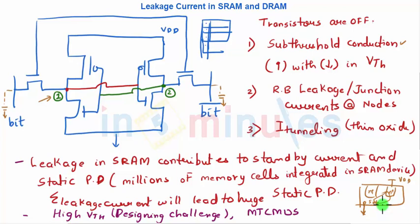All this leakage current is nothing but the standby current, because all of these are occurring when the transistor is in the off state. At least the first one is due to the reverse bias condition, and this is due to the thin oxide.